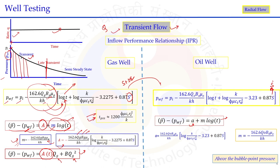For the oil well under transient flow condition, collecting P_WF data at different times and plotting pressure versus log(t) gives parameters A and m. From the slope m, unknown reservoir properties such as permeability can be calculated. From the A equation, near-wellbore parameters like thickness h can also be determined. Therefore, for both oil and gas wells, pressure transient analysis — by disturbing the well and measuring P_WF versus time — yields two parameters A and m relating reservoir and fluid properties.